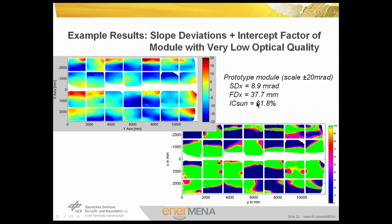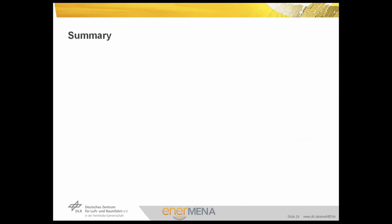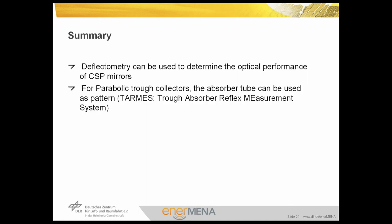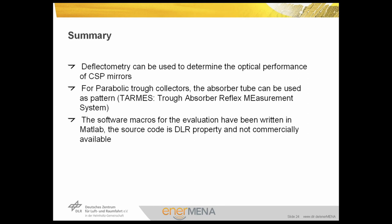Let's now summarize what we have learned in units 5.1 to 5.4. The measurement method deflectometry can be used to determine the optical performance of most CSP concentrators and mirrors. If we want to obtain the optical performance of parabolic trough collectors, the absorber tube can be used as a pattern for deflectometric measurement. The measurement method is then called TARMS — Trough Absorber Reflex Measurement System. The software macros for the evaluation have been written in MATLAB; the source code is DLR property and not commercially available. However, you have now achieved the capabilities to perform the measurement and can send the data to DLR experts who may do the evaluation for you.